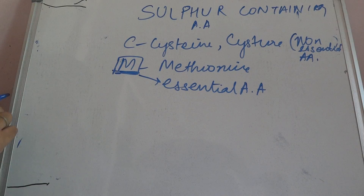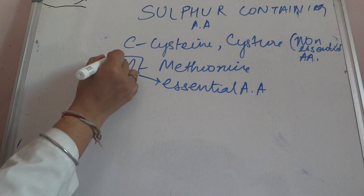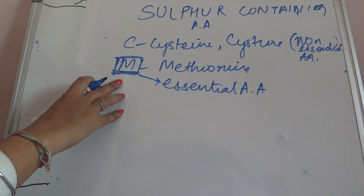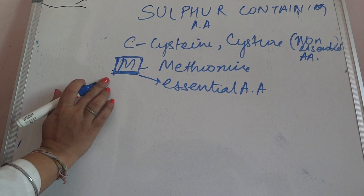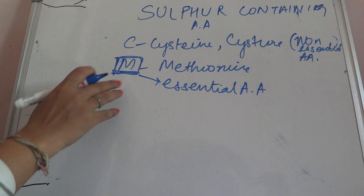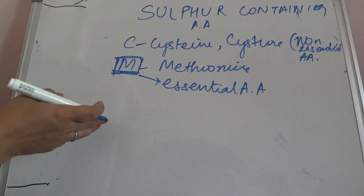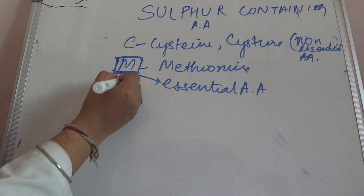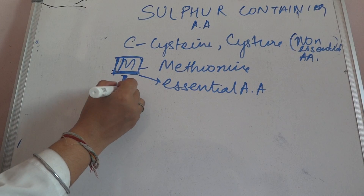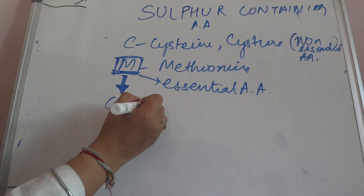Methionine is an essential amino acid. As I mentioned in the last video, the essential amino acid is important — you have to take it in the diet, and through these essential amino acids, further metabolism of the group takes place. So methionine is the one amino acid which will lead to the production of other sulfur-containing amino acids, that are cysteine and cystine.